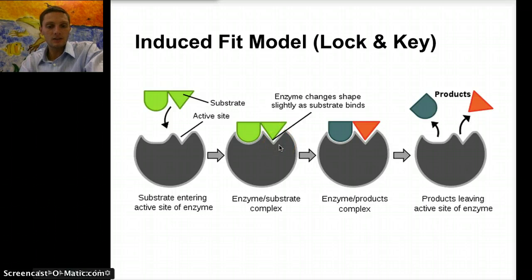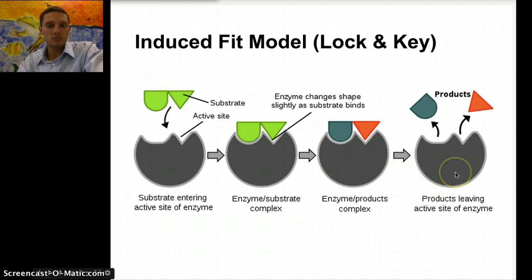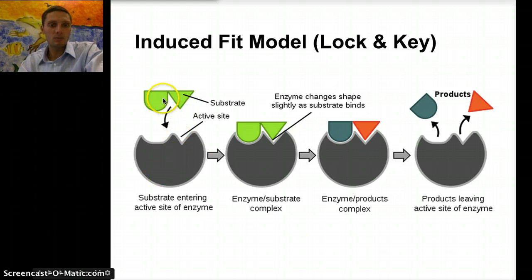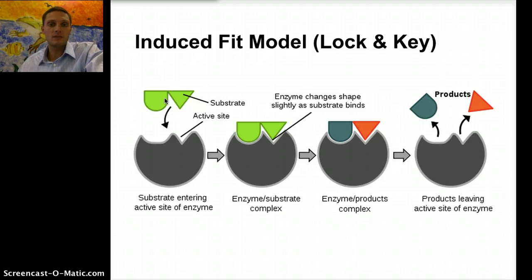The enzyme slightly changes its shape so that it binds to the substrate, and then the enzyme releases the products. The lock portion would be like the enzyme; the key portion is the substrate, which provides the specific structure for the enzyme to bond with. The enzyme can only connect or bond with a specific substrate to produce the products of the chemical reaction.